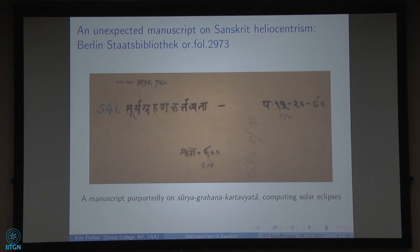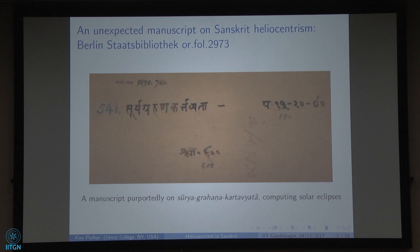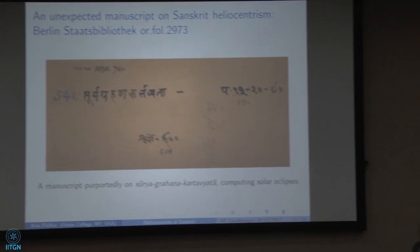One of the manuscripts that I thought might be useful to a study of Sanskrit astronomical tables — that I'm currently completing with my colleague Clemency Montel — was one called the Surya Grahana Kartavyata, the performance of or computation of the solar eclipse. What this turned out to be, in fact, was something not unrelated to that, but with a much broader scope and a very specific interesting application to the history of mathematical astronomy.